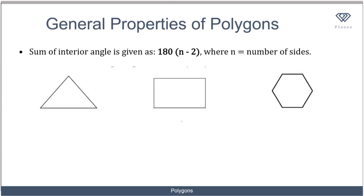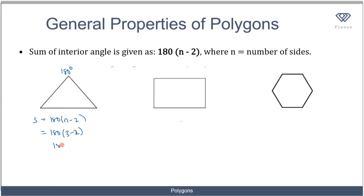Now let's consider general properties of polygons. The sum of interior angles is given by the formula: 180 × (n − 2), where n is the number of sides. For a triangle, n equals 3, so the sum is 180 × (3 − 2) equals 180 × 1 equals 180 degrees, which confirms the triangle angle sum property.